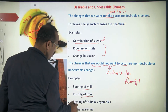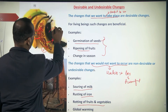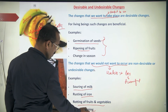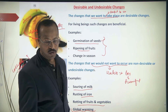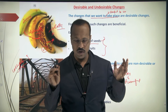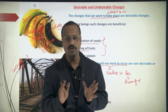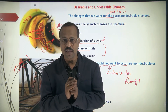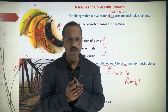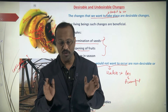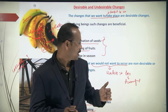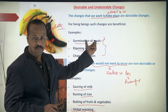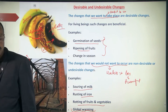Rotting of fruits and vegetables is also undesirable. Global warming is another major undesirable change — scientists and countries all over the world are trying to reduce it, arranging meetings and taking steps every year to address it. These all fall under undesirable changes.